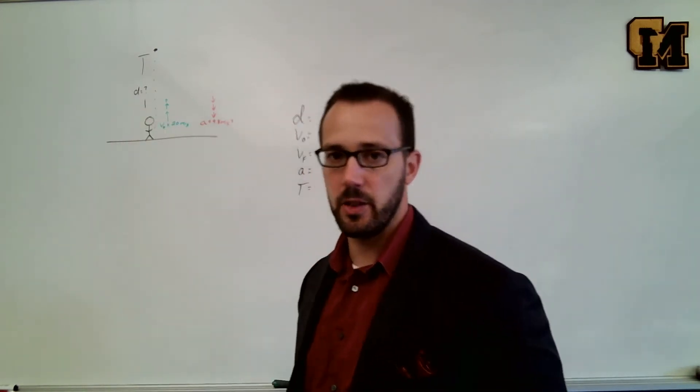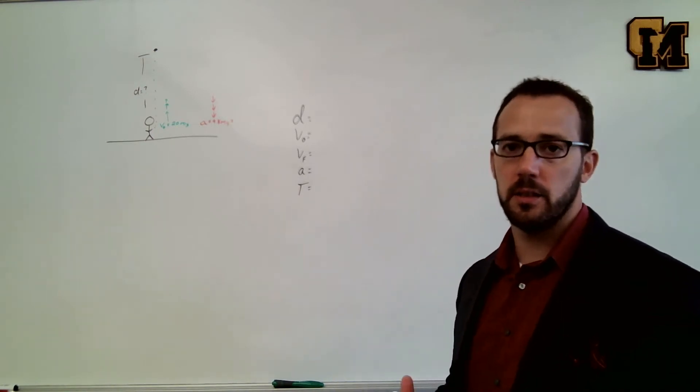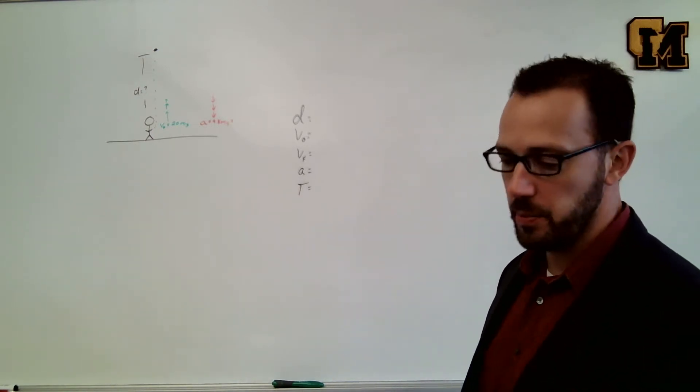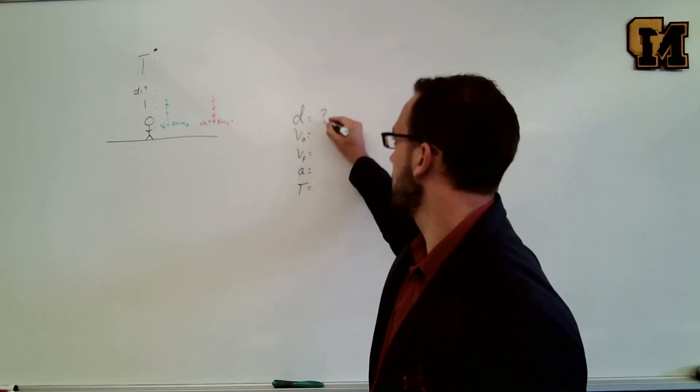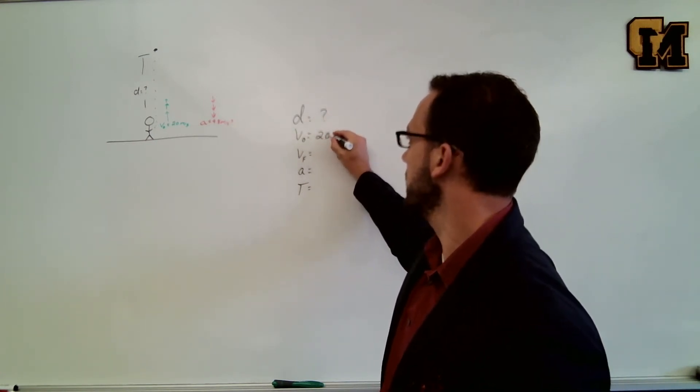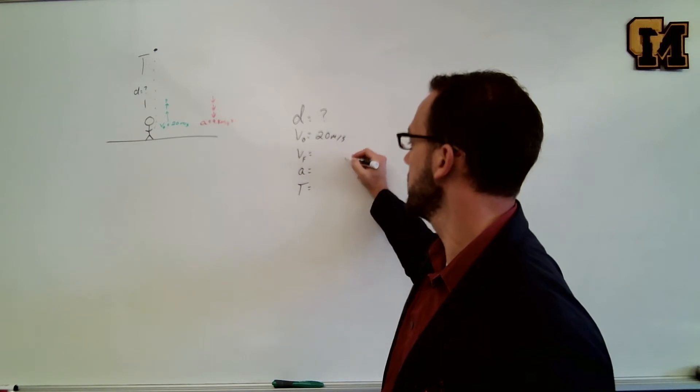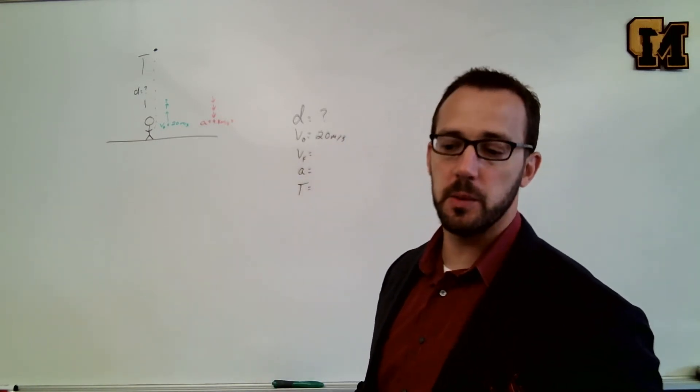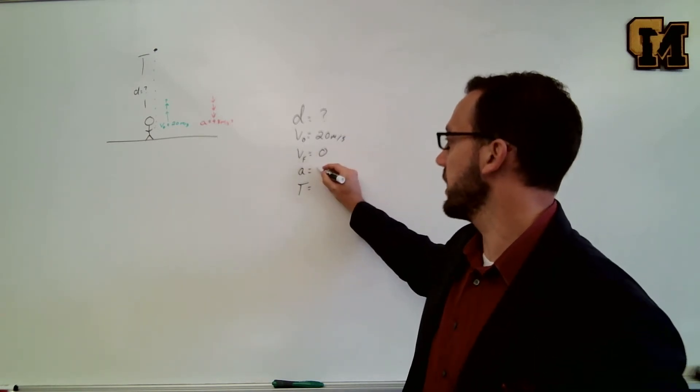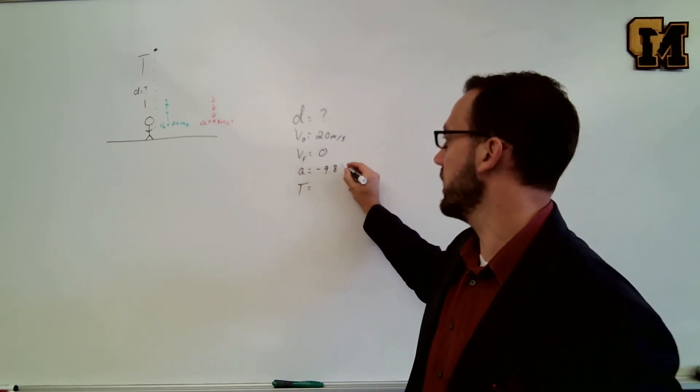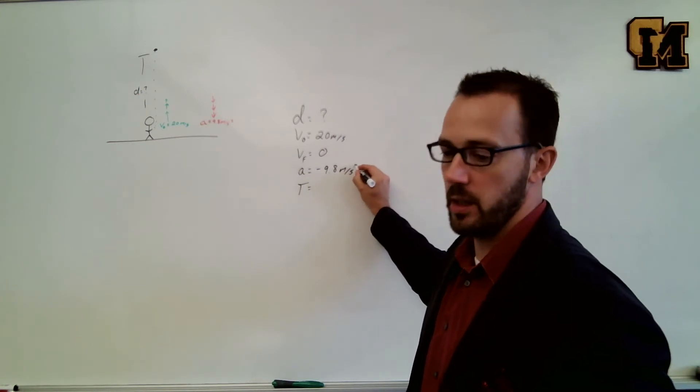We want to know how high this thing is going so we're going to use kinematics to do that. We have to pull our numbers out of the problem. So d is the question mark. The initial velocity is 20 meters per second. When it gets to its highest possible point the final velocity is going to be zero and the acceleration is negative 9.8 meters per second squared.